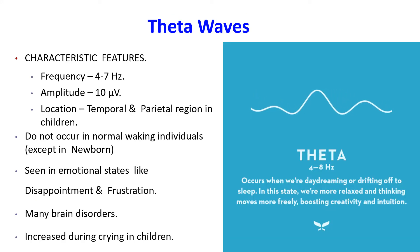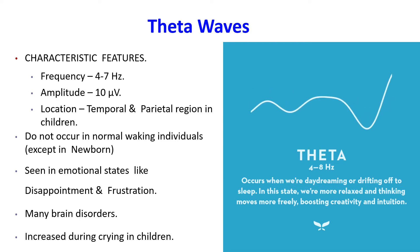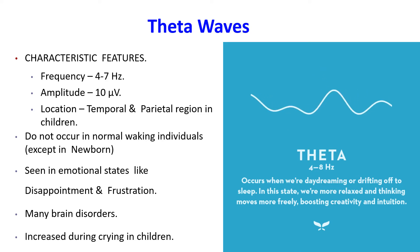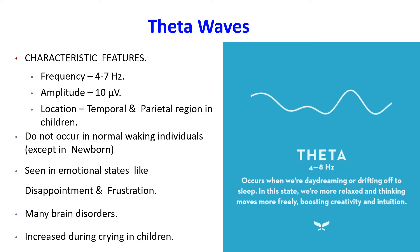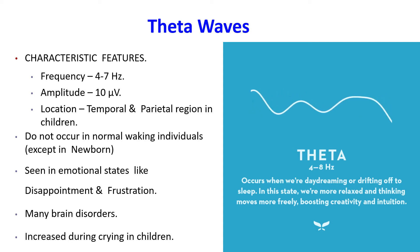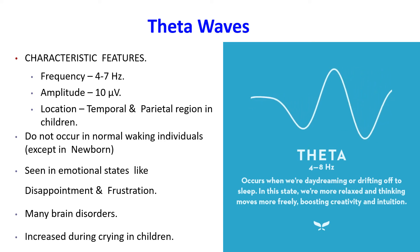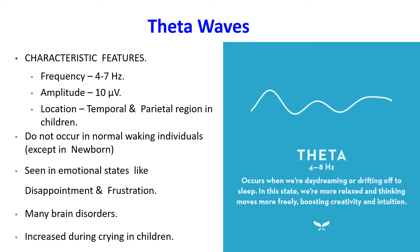Theta waves have a frequency between 4 and 7 Hz and an amplitude of 10 microvolts, slightly larger than alpha waves. They are recorded from the temporal and parietal region in children. They do not occur in normal waking individuals except in newborn infants. They are seen in emotional stress in adults, particularly during disappointment and frustration, in many brain disorders, and the theta component of the EEG often increases during crying in children.